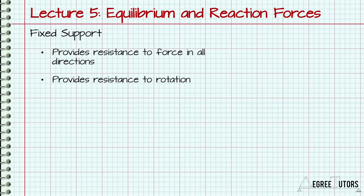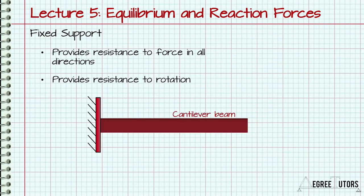A fixed support provides resistance to both linear and rotational movement, and therefore can develop a vertical and horizontal reaction force as well as a moment reaction. The classic example of a structure which utilizes a fixed support is the cantilever beam. Notice that only one fixed support is required to ensure that this beam remains in a state of static equilibrium.